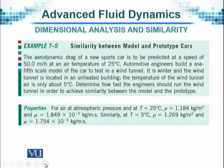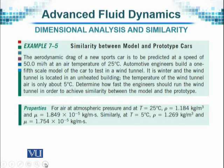We write down the given data. At atmospheric pressure and 25 degrees centigrade, the density rho is 1.184 kilograms per meter cube and the coefficient of viscosity mu is 1.849 × 10⁻⁵ kilograms per meter second. In the tunnel at 5 degrees centigrade, the density of air is 1.269 kilograms per meter cube and the coefficient of viscosity is 1.754 × 10⁻⁵ kilograms per meter second.